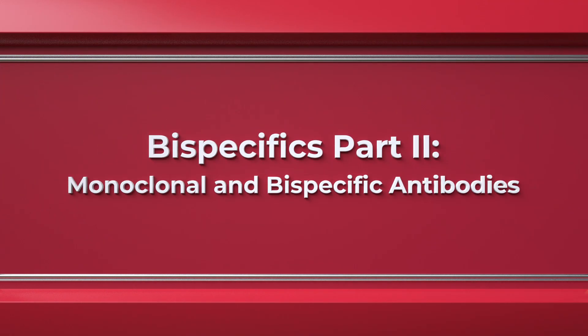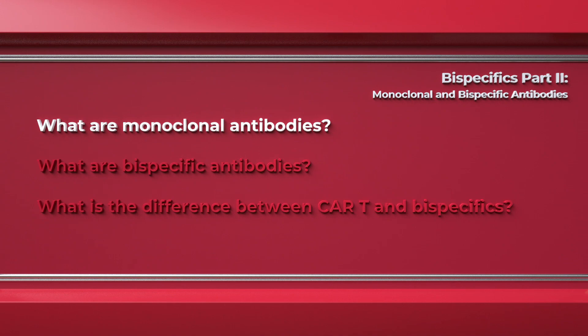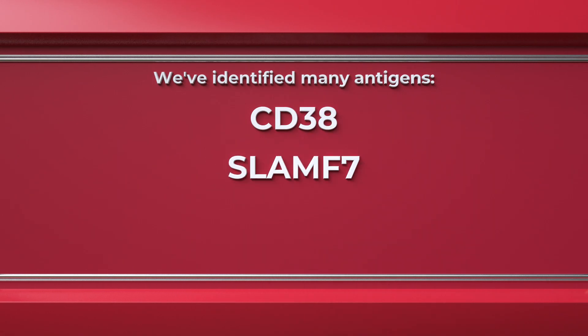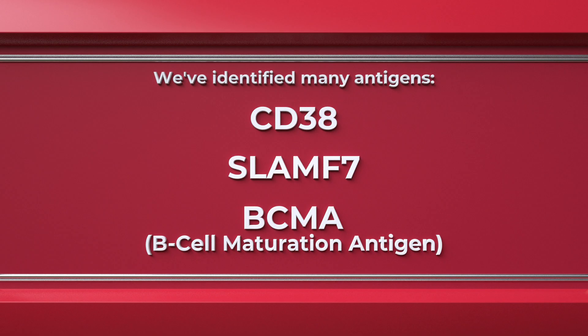Monoclonal antibodies are antibodies that we create in the lab that reproduce the concept of what antibodies do. We've identified many antigens on myeloma cells that include things such as CD38, SLAMF7, and BCMA or B-cell maturation antigen. We now have drugs that are specific to each of these antigens on the outside of the myeloma cell that can hook onto them to help destroy that myeloma cell. We call these monoclonal antibodies because they're designed to attach to one antigen on the myeloma cell.